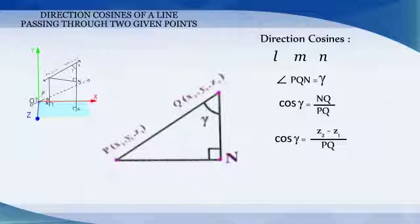Similarly, we get cos alpha is equal to x2 minus x1 by PQ and cos beta is equal to y2 minus y1 by PQ.